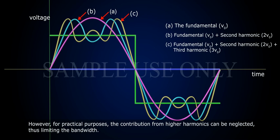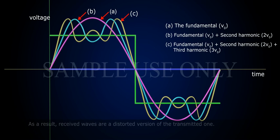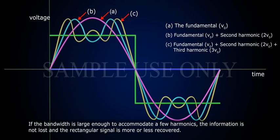However, for practical purposes, the contribution from higher harmonics can be neglected, thus limiting the bandwidth. As a result, received waves are a distorted version of the transmitted ones. If the bandwidth is large enough to accommodate a few harmonics, the information is not lost, and the rectangular signal is more or less recovered.